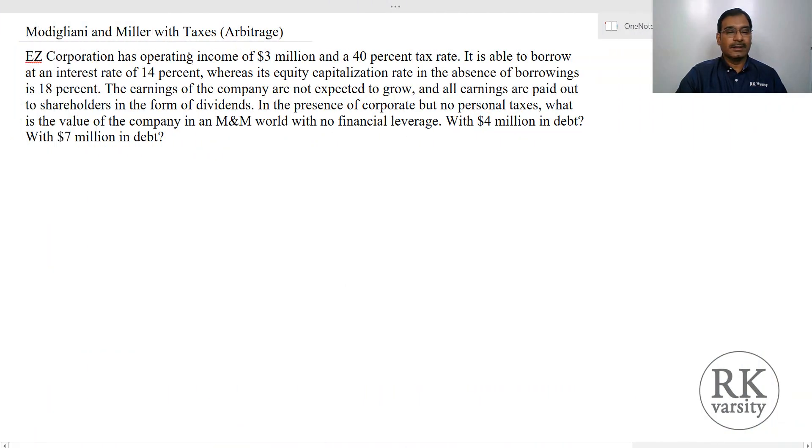EZ Corporation has an operating income of $3 million and is in a 40% tax bracket. Its borrowing rate is 14% whereas equity capitalization rate is 18%, and the earnings of the company are not expected to grow irrespective of whether you use total debt or equity or a combination of debt and equity. All the earnings are paid out to the shareholders in the form of dividends.